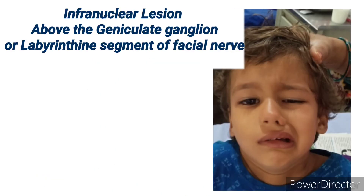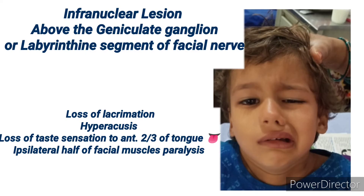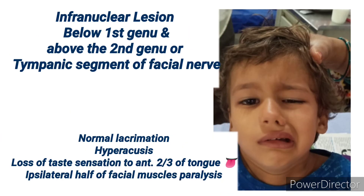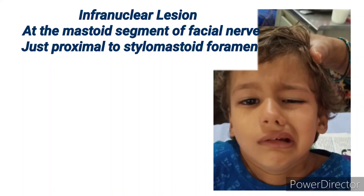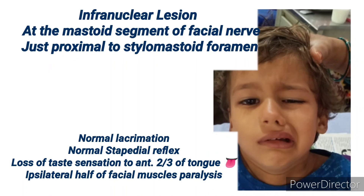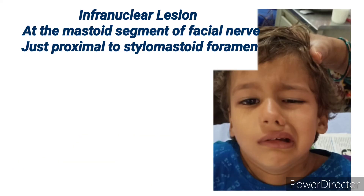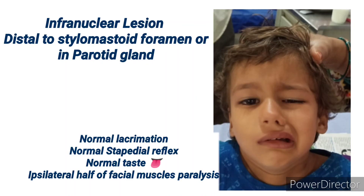If the lesion is above the first genu, the child will have loss of lacrimation, hyperacusis, and loss of taste on the anterior two-thirds of the tongue. If between the geniculate ganglion and the second genu, lacrimation is normal, hyperacusis is present, taste loss is present, and the ipsilateral half of the face is affected. If after the origin of the nerve to stapedius, the stapedial reflex and lacrimation are normal, but taste is affected and the whole ipsilateral half of the face is affected. If the lesion is at the stylomastoid foramen or in the parotid gland, lacrimation, stapedial reflex, and taste sensation are all normal — only the ipsilateral half of the face is affected.